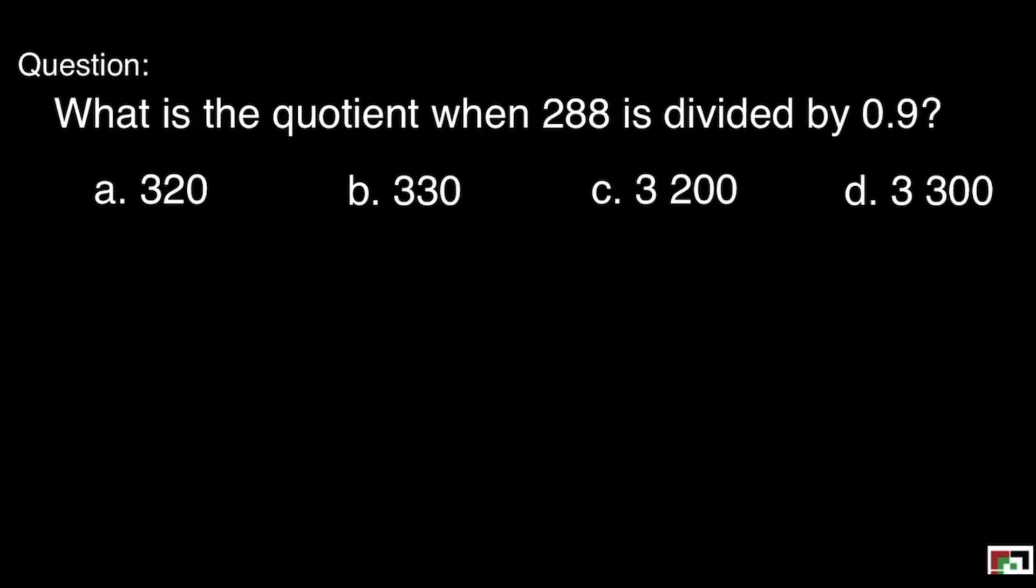We have the first question here. What is the quotient when 288 is divided by 0.9? A. 320, B. 330, C. 3,200, D. 3,300. Our equation is 288 divided by 0.9. Our dividend, our divisor, and whatever is the answer is our quotient.